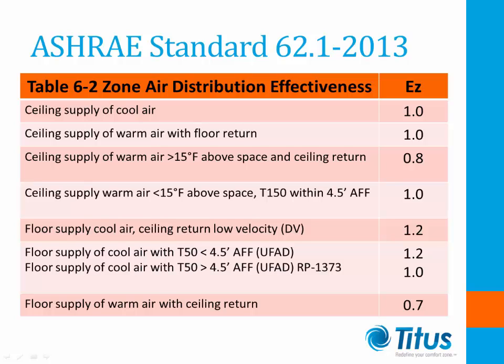The chart shown displays the part of Table 6-2 required for our discussion. For ceiling supply of warm air with ceiling return, the vertical jet must reach a 4.5-foot level above the floor at a velocity of 150 feet per minute. Additionally, the temperature difference for supply air must be less than or equal to 15 degrees above the space temperature. The objective of the different EZ factors in this chart is to ensure that ventilation air provided to the space actually reaches the breathing zone where the occupants reside.